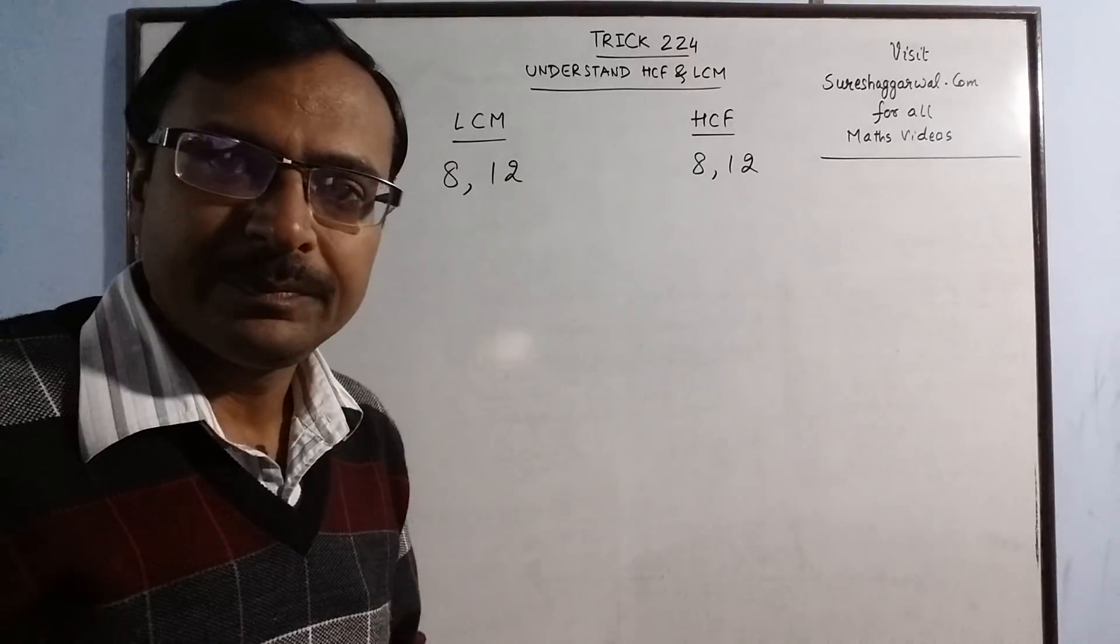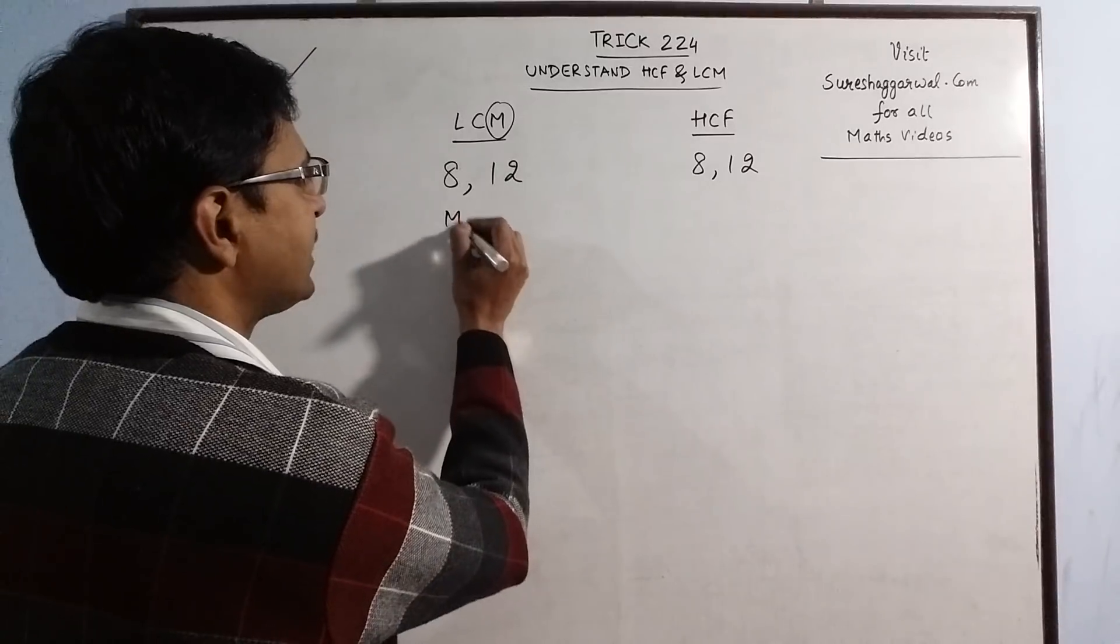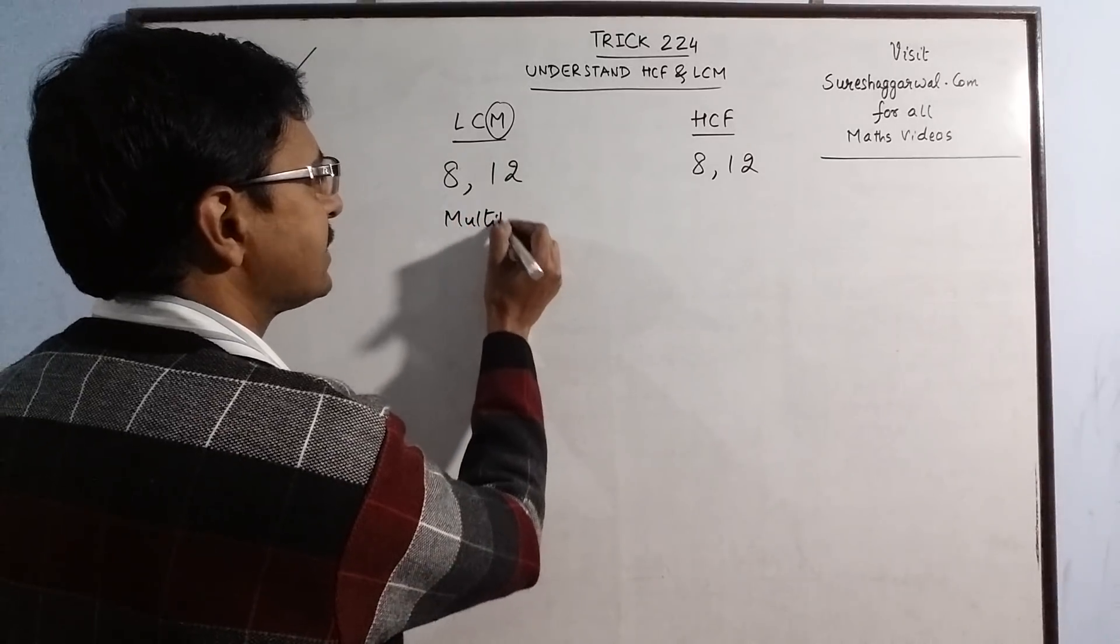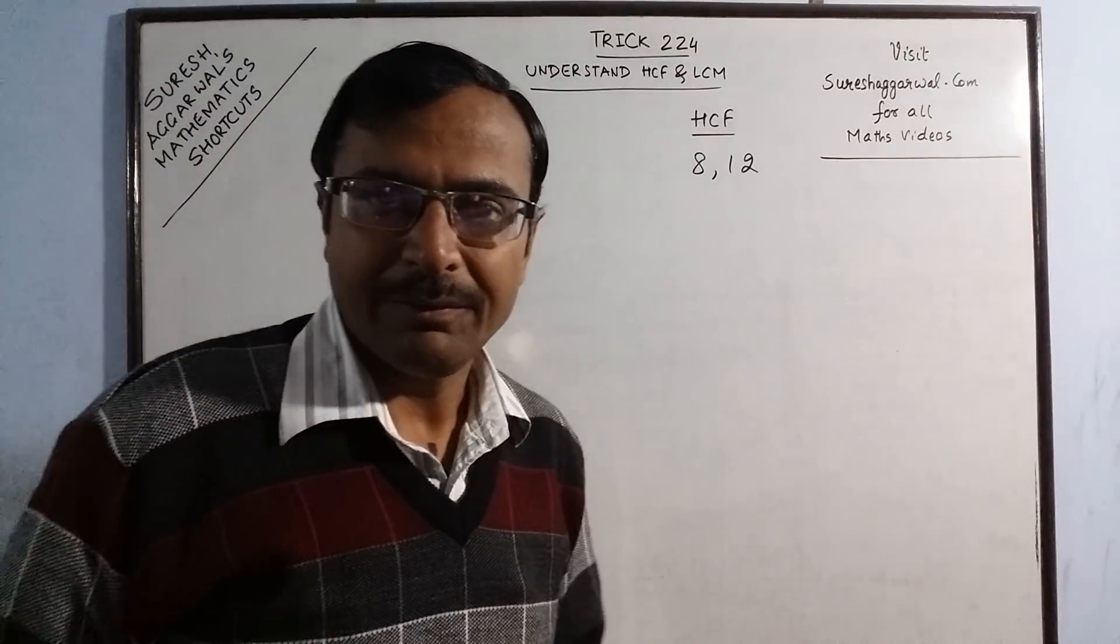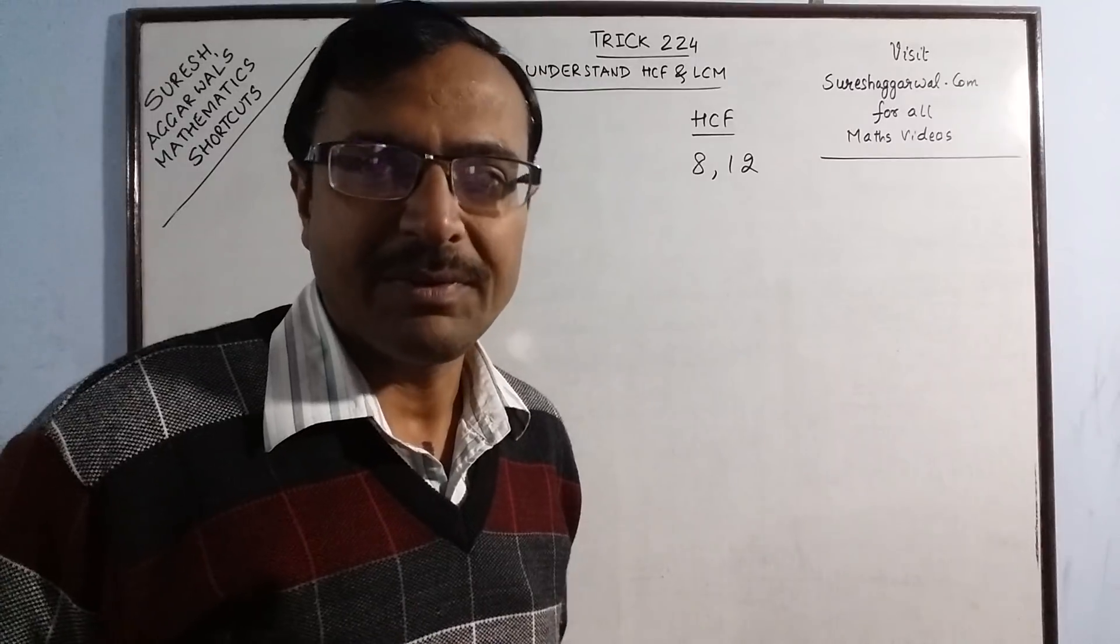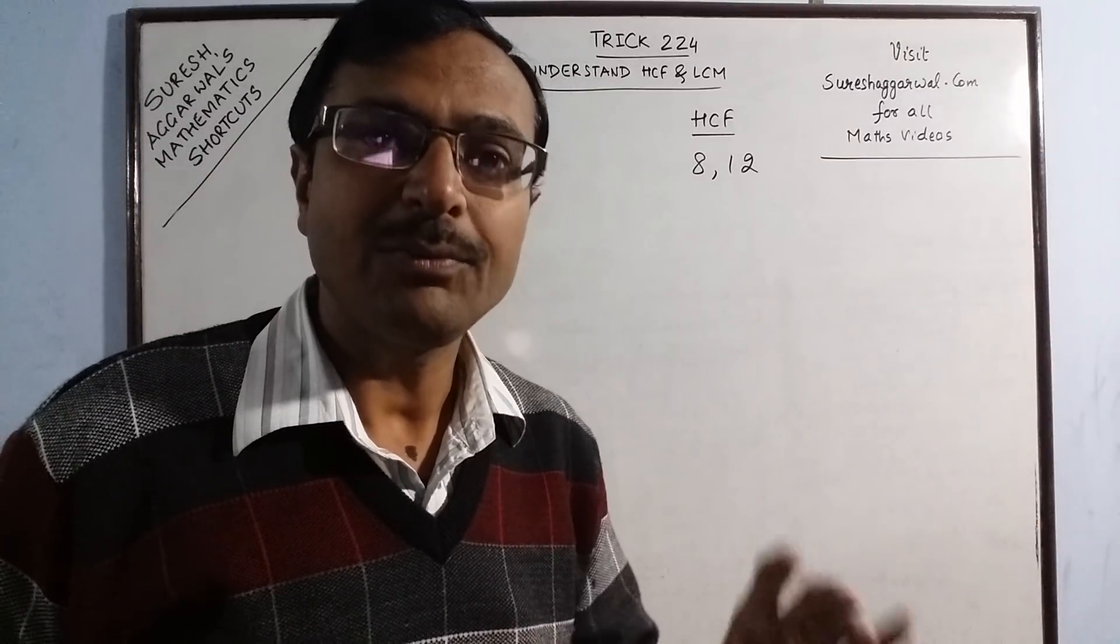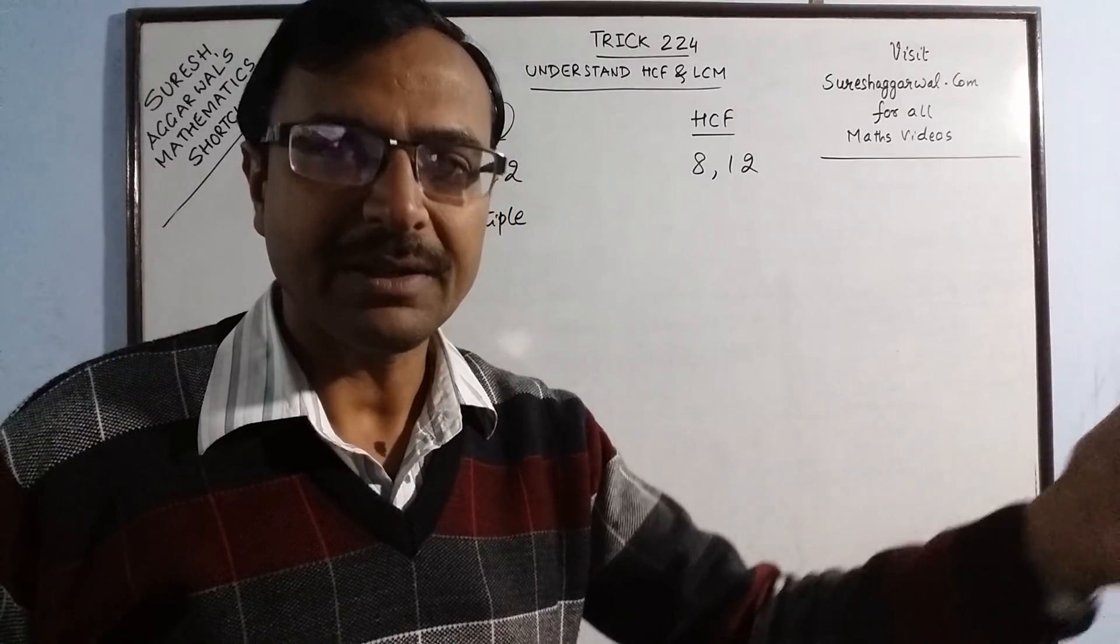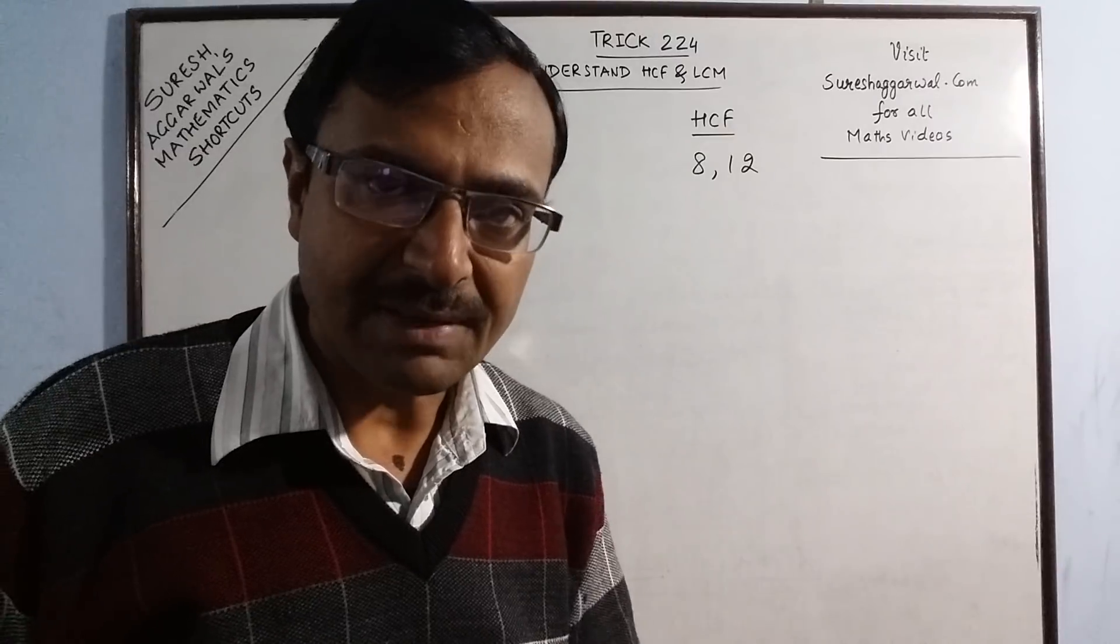Now in LCM, there is an alphabet M and M stands for multiples. Now what are multiples? When you write table of a number like 7: 7 1s are 7, 7 2s are 14, 7 3s are 21. So 7, 14, 21, 28, 35 and so on, they are called multiples of 7.